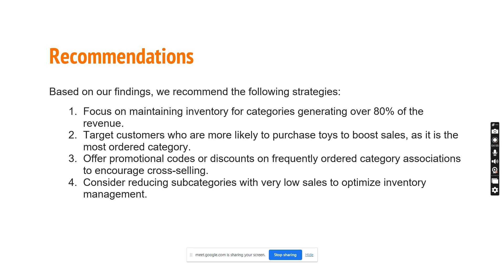Based on these insights, here are our recommendations. First, the company should focus on maintaining inventory for categories generating more than 80 percent of the revenue by always keeping them in stock. Second, the company should target customers who are more likely to buy toys to boost sales. Third, offer promo codes or discounts on frequently ordered category associations to encourage cross-selling. Finally, the company can reduce subcategories with very low sales to optimize inventory management.